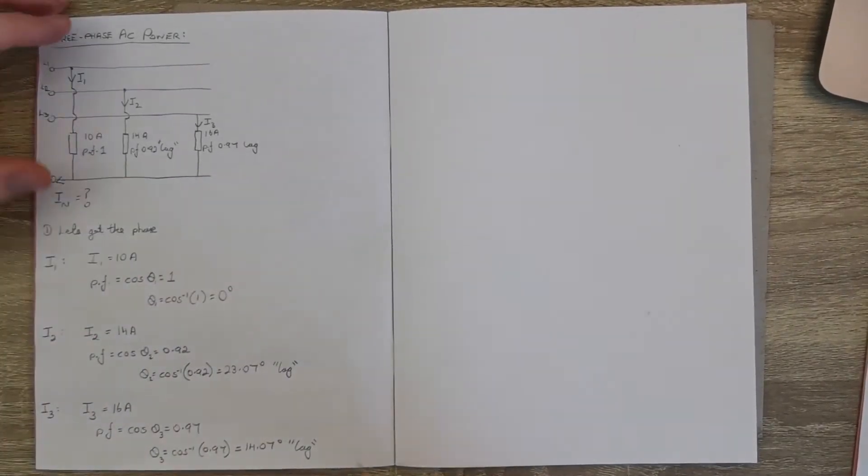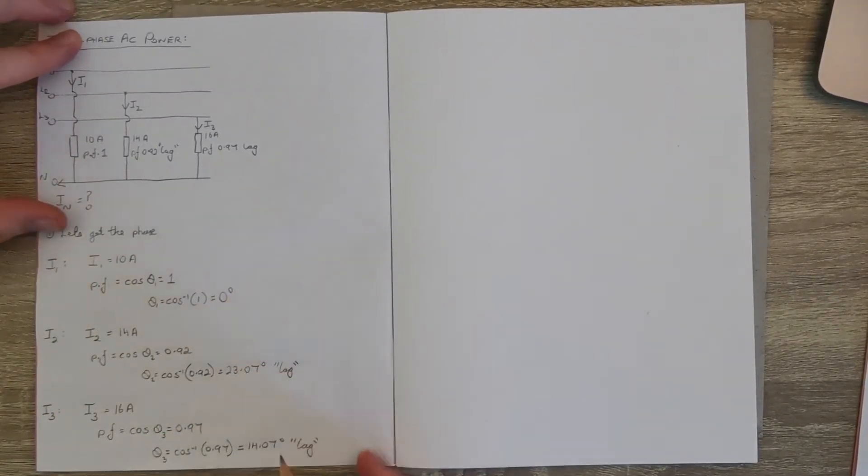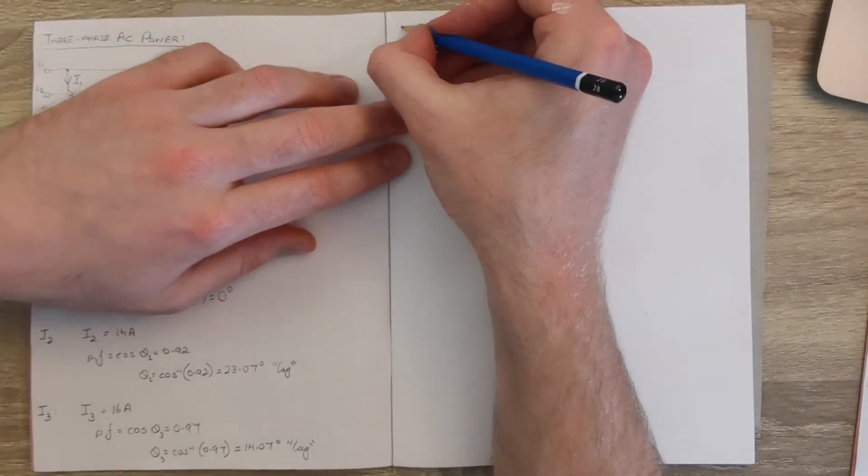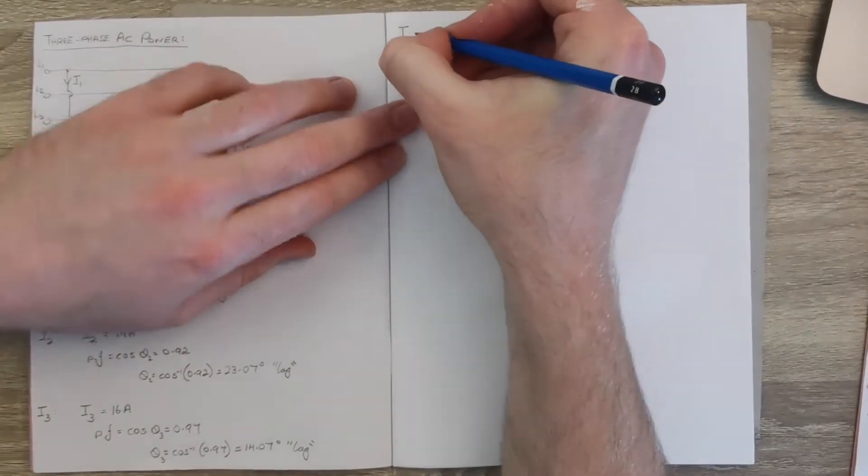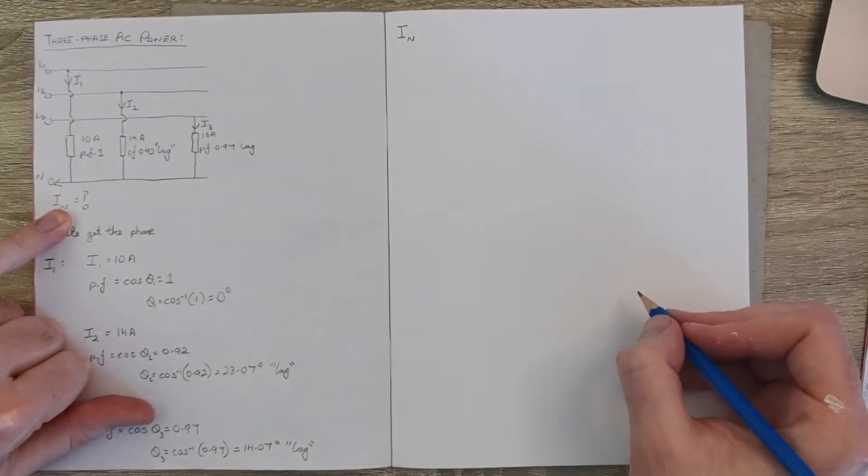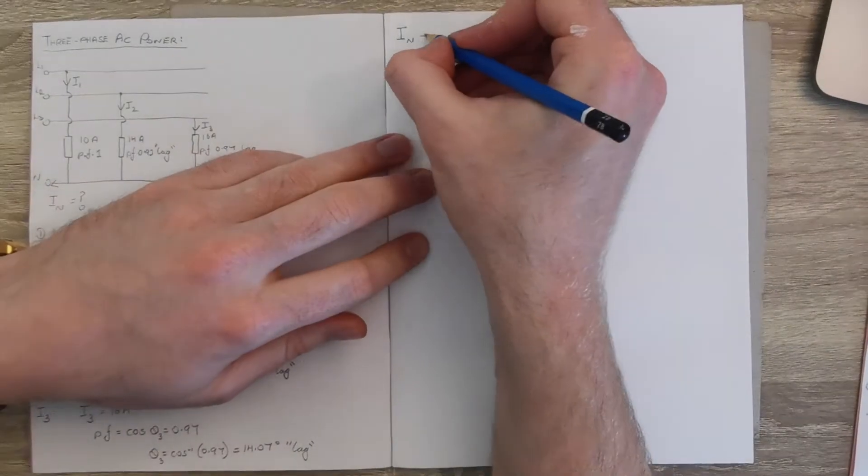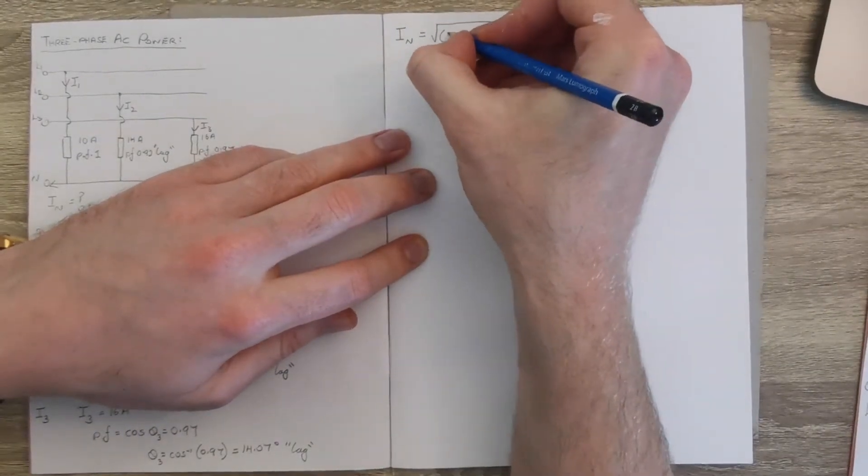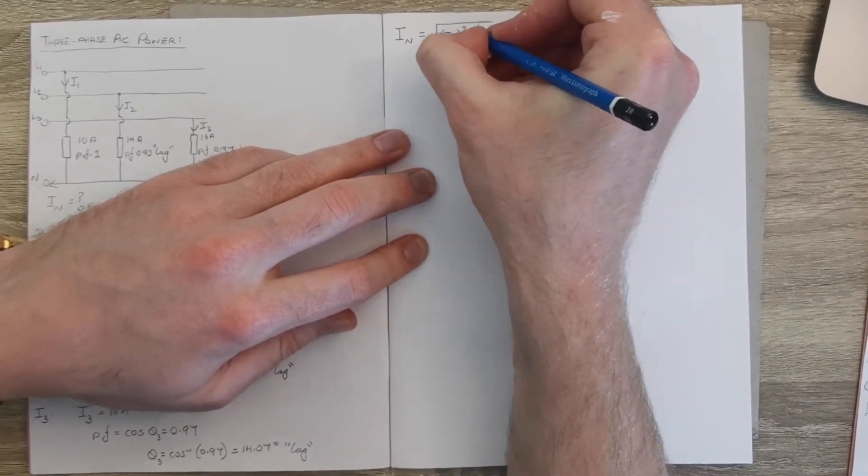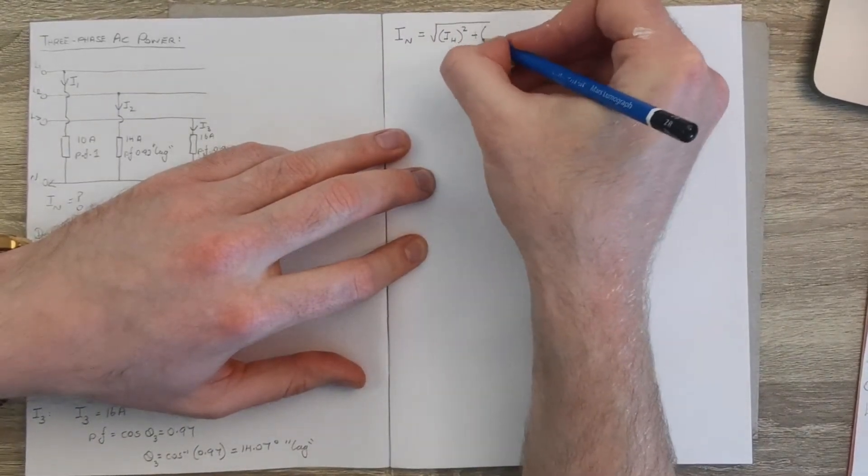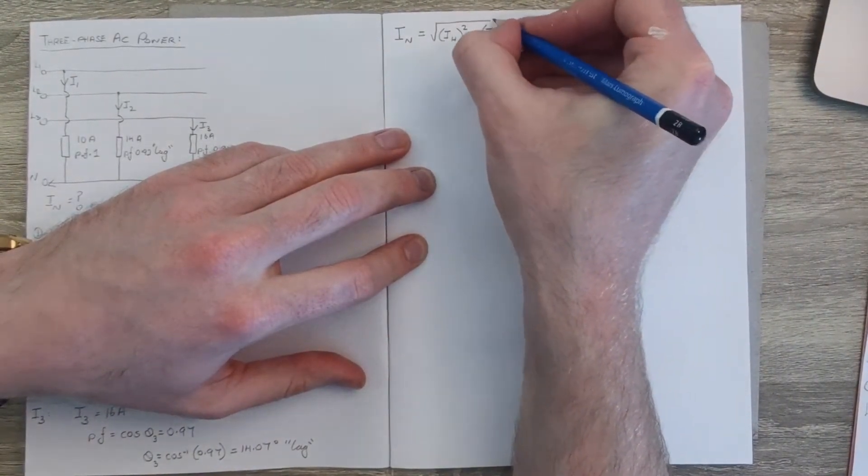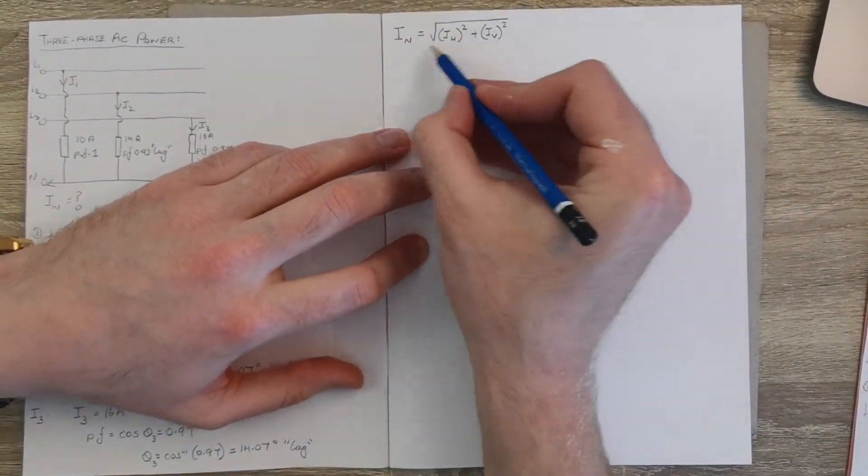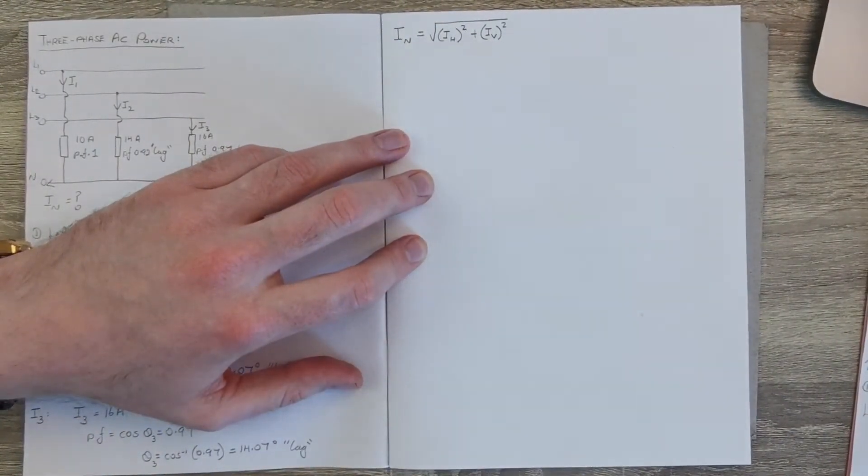If we look at this now, we have the magnitude and phase of each current in each phase, and the question is asking us to work out the neutral current IN. Now if you look in your formula book, you'll see there's a formula for the neutral current in a three-phase supply, and it's the horizontal components and the vertical components, and we get the square root of all that.